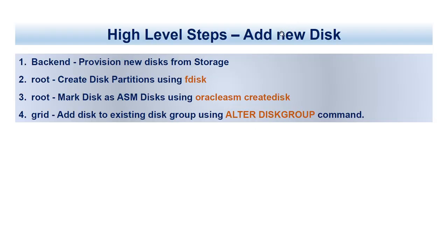These are the high-level steps to add a new disk to an existing disk group. In the backend we need to provision a new disk from storage so that the disk is visible to the Unix server or database server. Using root, you'll create the disk partition using the fdisk command. Then you'll mark the disk as an ASM disk using the oracleasm create disk command — that also has to be done by root. Once these two steps are done, you'll log in as grid and use the ALTER DISKGROUP command to add the disk to the existing disk group.